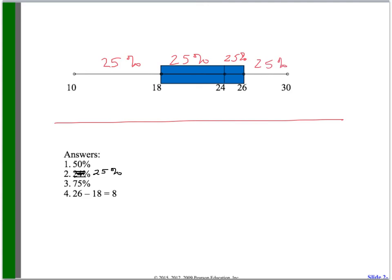So for number one, it was 50% because they wanted to know what percent went from 24 to 30. That's two of the sections, so that's 50%. Same thing for, same type question from 18 to 24, that's 25%. From 10 over to 26, that was three of those sections. So that's 75% of the data.